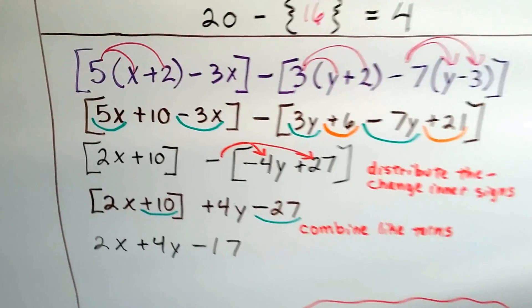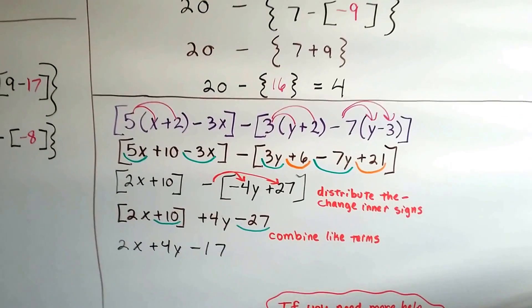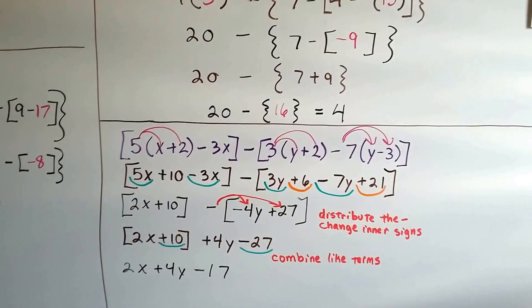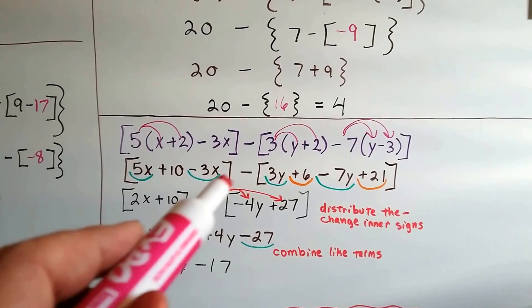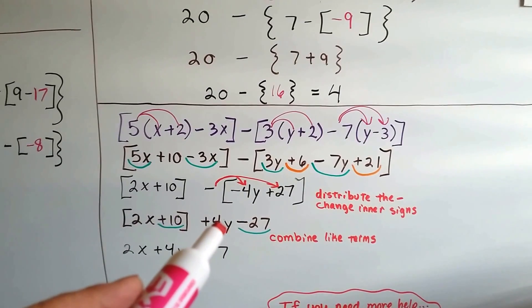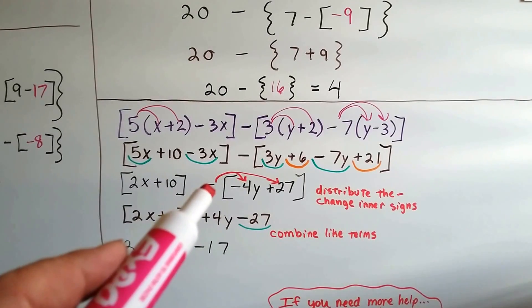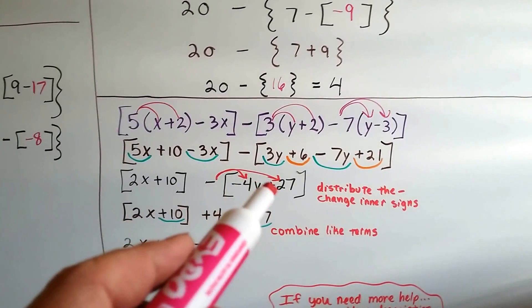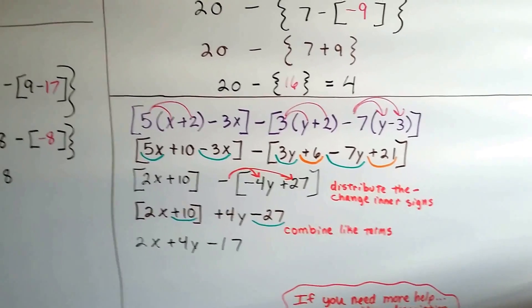Whew! That was quite a lot of work, wasn't it? But if you remember that we can distribute this negative sign to each one and then just change the signs inside. The minute you see this, think, okay, that's going to be a positive 4y. That's going to be a negative 27.